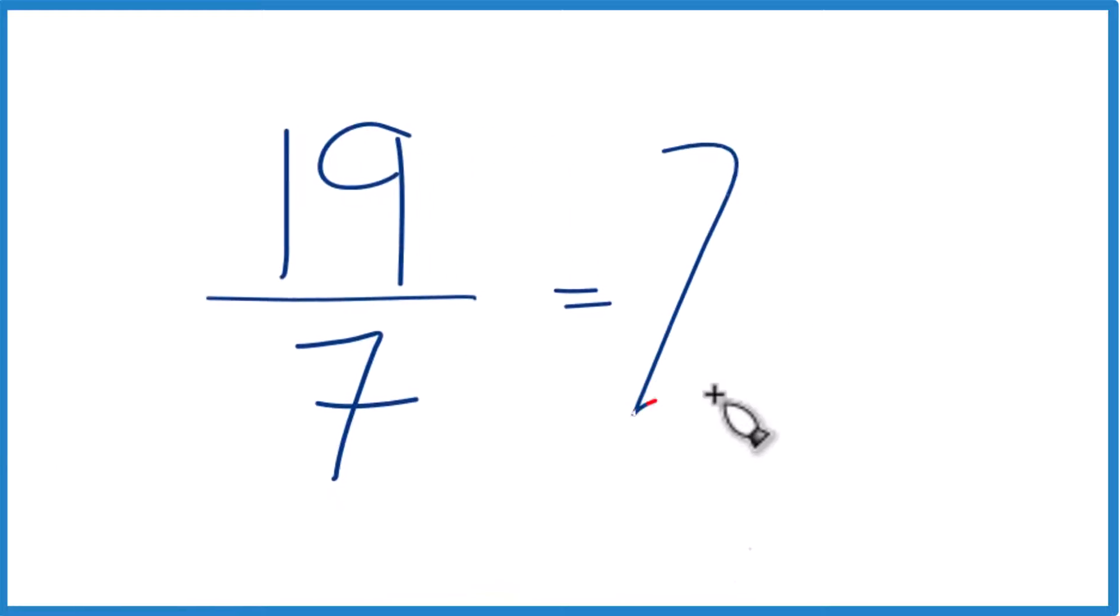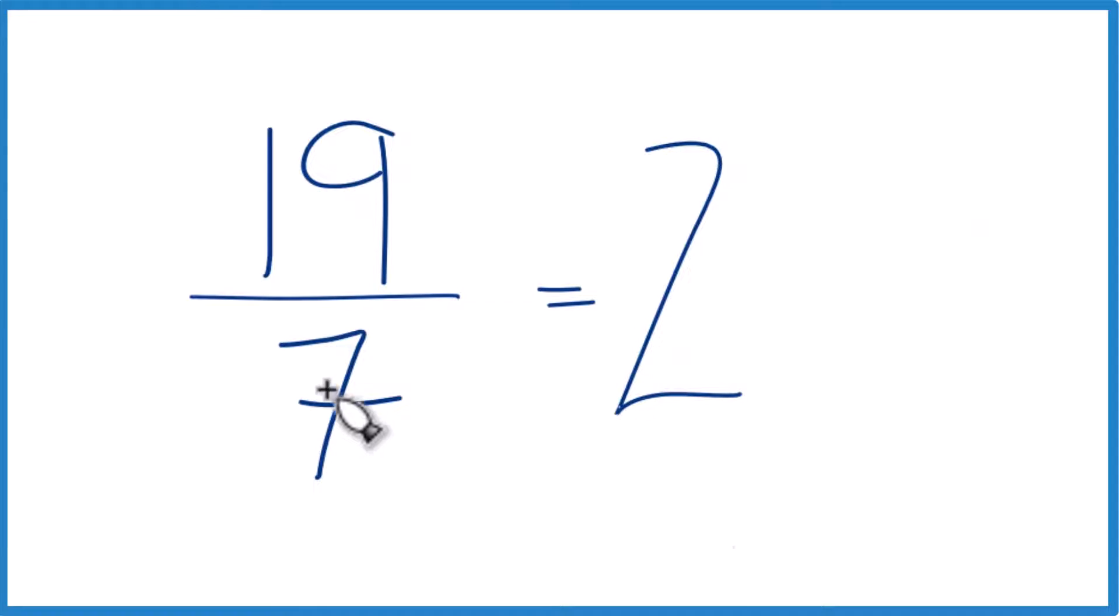2 becomes the whole number. 2 times 7 is 14 with 5 left over. 19 minus 14 is 5. So we have 5 as our numerator. We just bring the 7 here across.